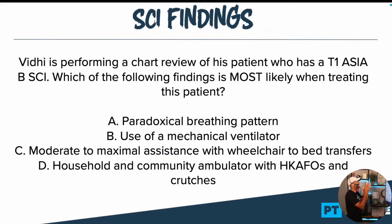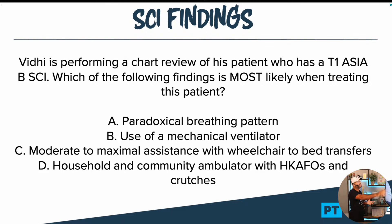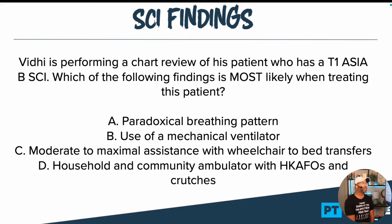All right, we're back. Let's go ahead and knock this question down. It says Viddy is performing a chart review of his patient who has a T1 ASIA B SCI. Which of the following findings is the most likely when treating this patient? A: paradoxical breathing pattern. B: use of a mechanical ventilator. C: moderate to maximal assistance with wheelchair to bed transfers. D: household and community ambulator with HKFOs and crutches.